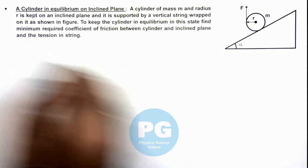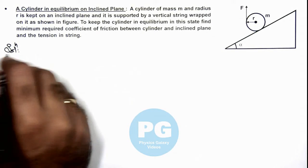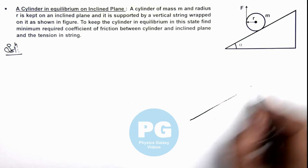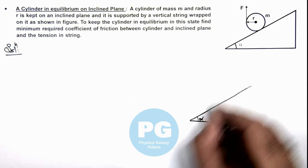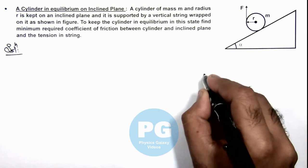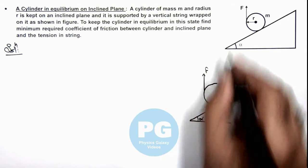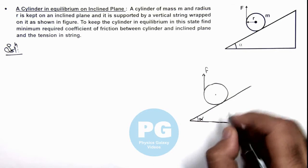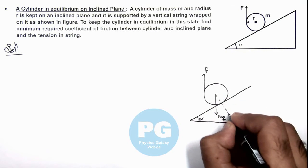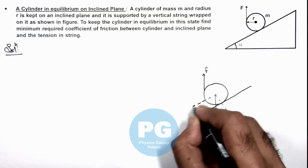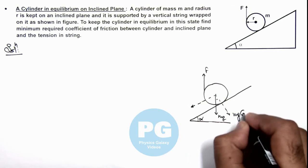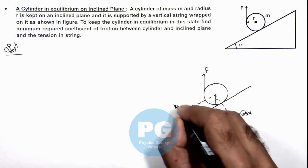Now, in this situation, we redraw the figure to analyze it properly. This angle is alpha and here we have kept a cylinder. A force is acting on the cylinder in upward direction. Here, the weight of cylinder mg is in downward direction which will have two components: along the incline and perpendicular to incline which are mg cos alpha and mg sine alpha.